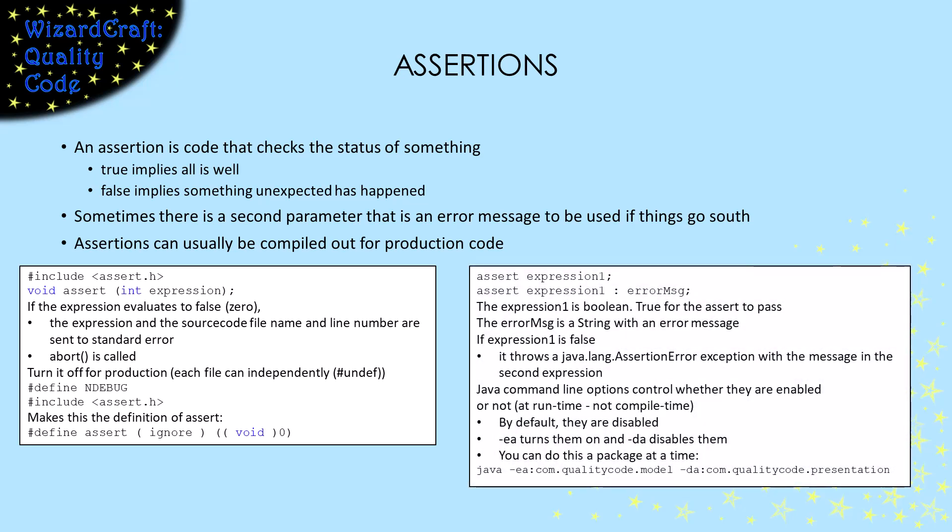In Java, assert is a statement that can have one or two operands. The first is the condition, and the second is an optional error message. If the condition is false, the assert will throw an exception. You could catch that exception if you want, but it's a runtime exception so it doesn't need a throws clause in the method declaration. If you don't catch it, it will cause your code to crash. Interestingly, we can turn them off, but that is done at runtime, not at compile time. The Java command that runs your code can have a clause to turn them on entirely, or one package at a time. This -ea flag turns them on. By default, they're turned off.